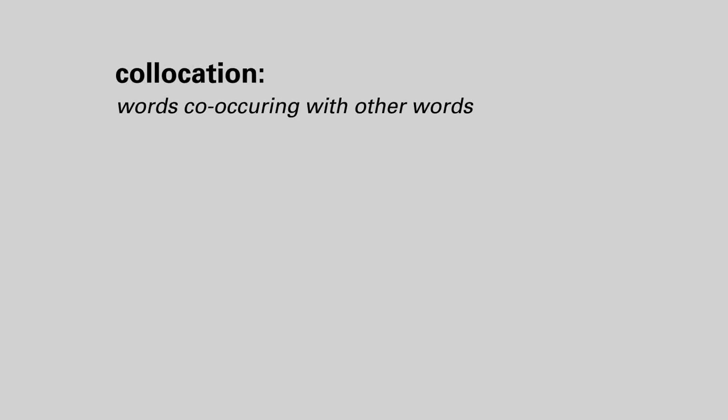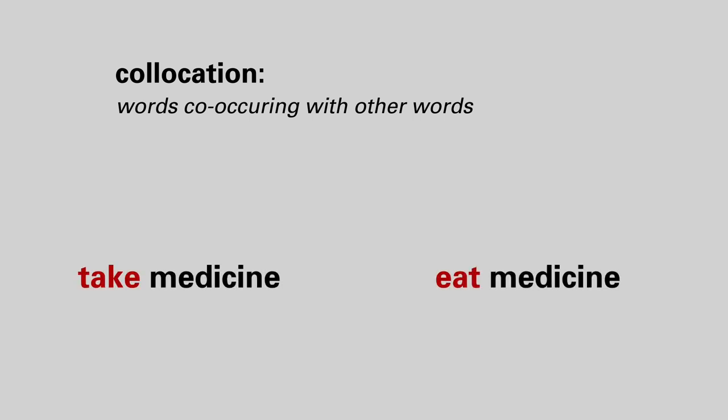I'm talking about things like collocation — words co-occurring with other words. For example, in English we say 'take medicine' instead of 'eat medicine', which would be the more likely translation in many languages. So knowing what a word means also includes knowing what other words typically go together with that word.